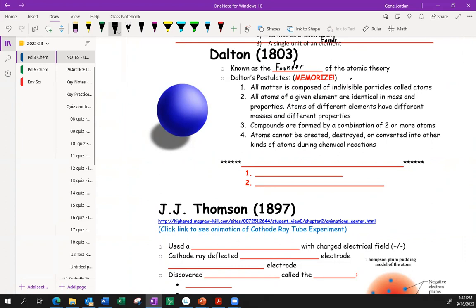Basically, all matter is composed of indivisible parts, called atoms. All atoms of a given element are identical in mass and property. So he thought they were all the same mass. Some of these theories turned out to be wrong. Some turned out to be true. Compounds are formed with two or more atoms. Atoms cannot be created, destroyed, or converted into other atoms during chemical reactions.